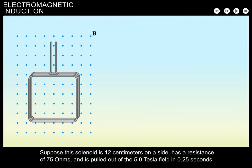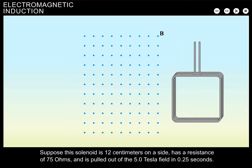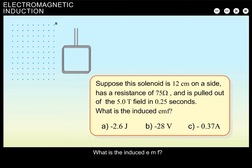Suppose this solenoid is 12 centimeters on a side, has a resistance of 75 ohms, and is pulled out of the 5.0 tesla field in 0.25 seconds. What is the induced EMF?